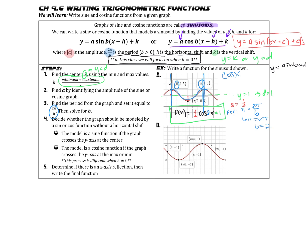Let's look at example B together. The first thing we want to do is identify that center line, which looks like Y equals negative 1. So whether you say K or D, the center is negative 1.